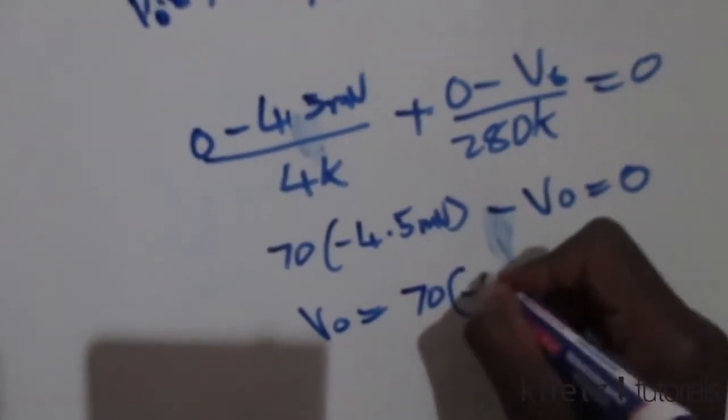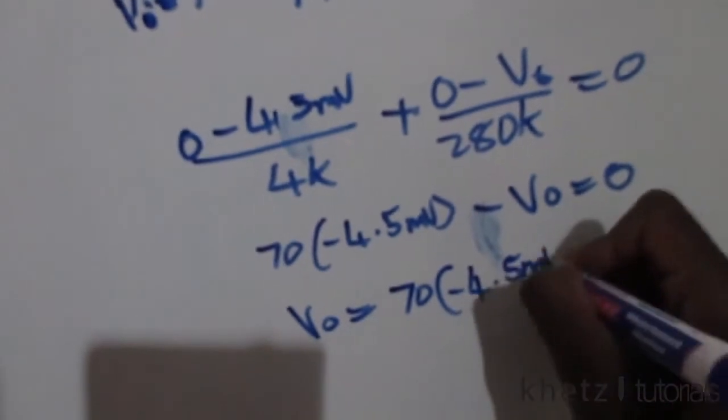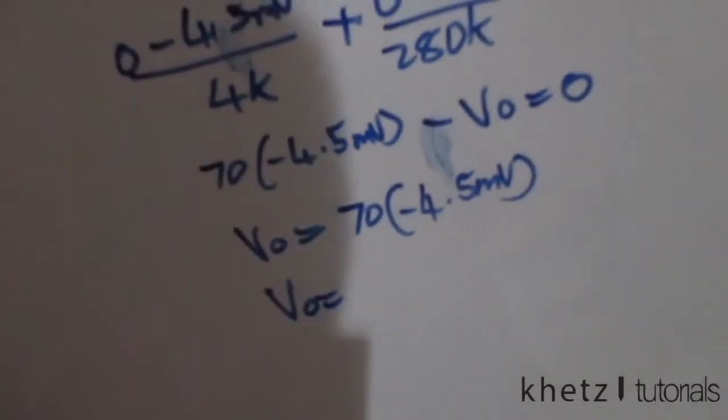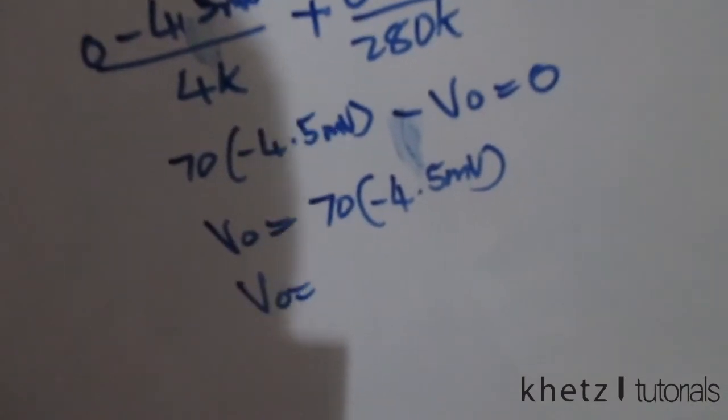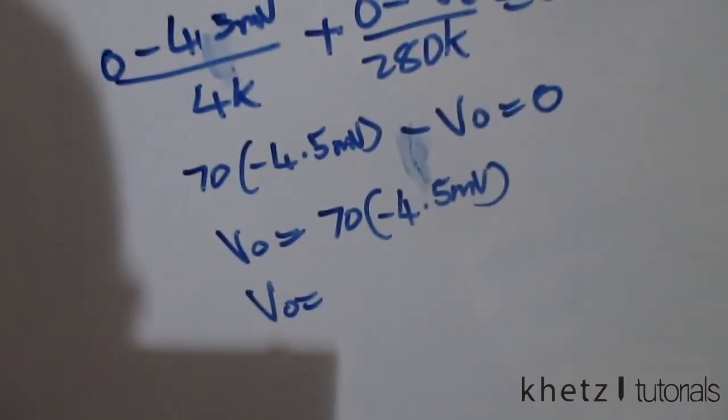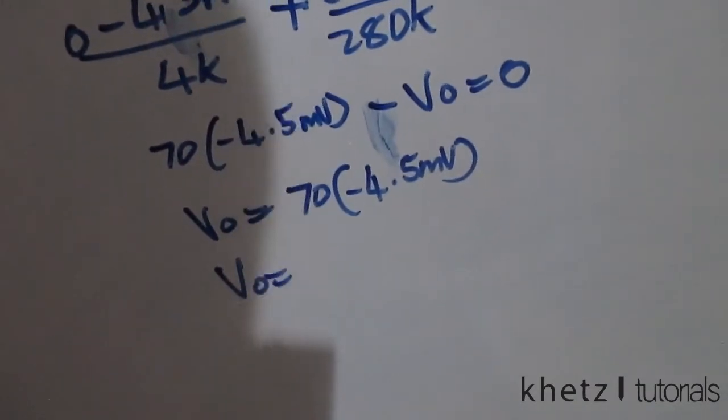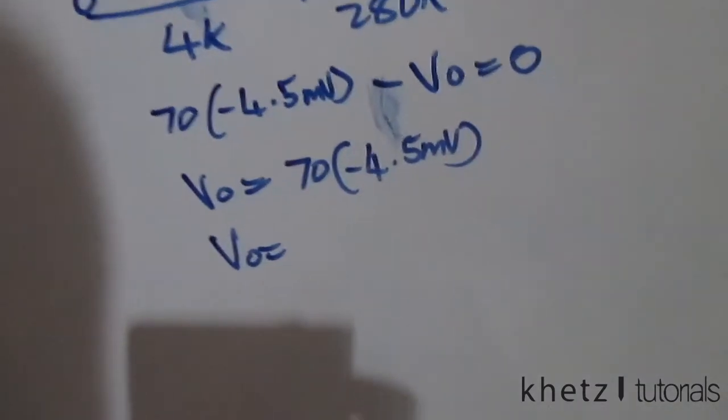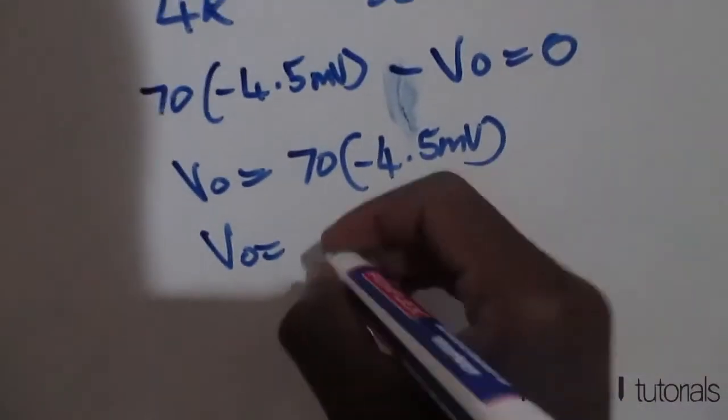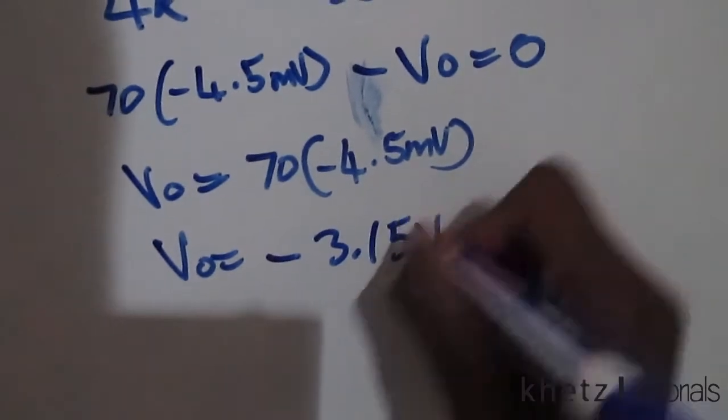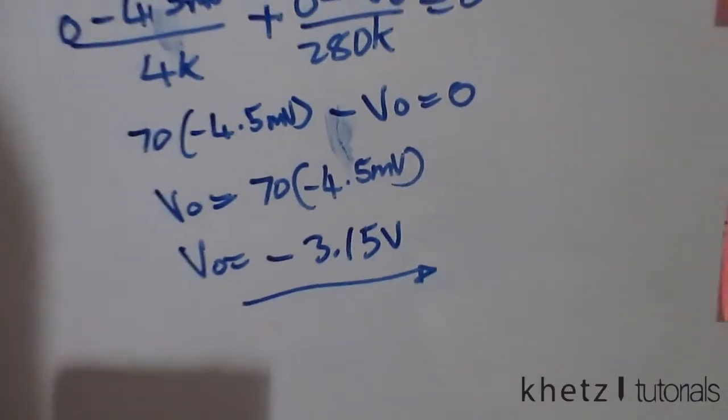70 multiplied by negative 4.5 millivolts. Punching this into your calculator should give you Vo equals negative 3.15 volts. Now moving on to...